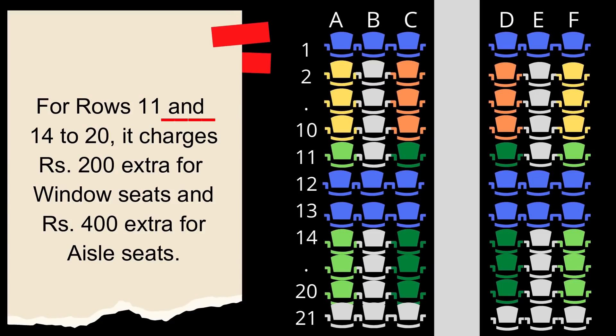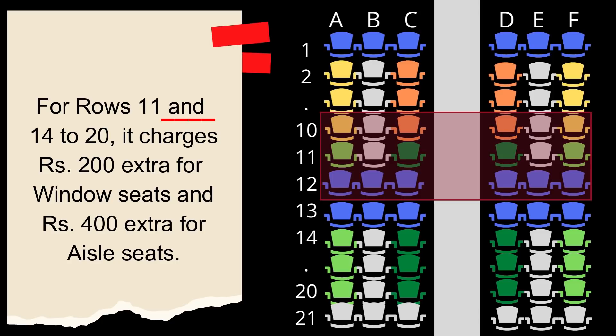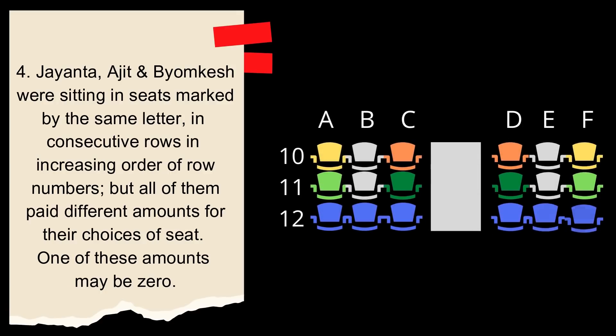This is where that 11 row irksome point is coming into play. If you would have read it carefully you would realize that it makes no sense. Why 11 and then 14 to 20. That's because we wanted to make sure that there are three rows which are priced different. So, now we have row number 10, 11 and 12. And we already know that here J, A and B are sitting.